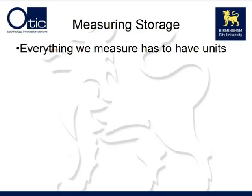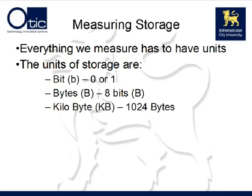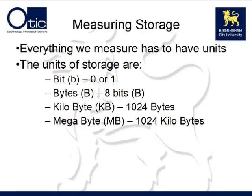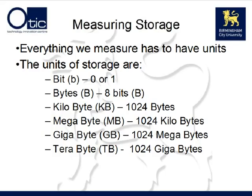If we are going to measure something, we have to have units in which to measure that quantity. The smallest unit of measurement of storage is a bit — simply a 0 or a 1, a binary digit. We can group 8 bits together to form a byte. If we group 1024 bytes together, we have a kilobyte, or KB. 1024 kilobytes gives us a megabyte. Grouping 1024 megabytes together forms a gigabyte, or GB. And grouping 1024 gigabytes together produces a terabyte, or TB.